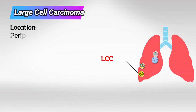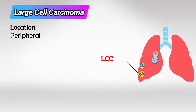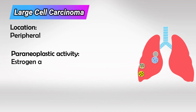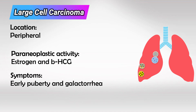Also in the periphery, we have large cell cancer. These are notorious for producing estrogen and beta-HCG, so they cause early puberty, gynecomastia, and galactorrhea.